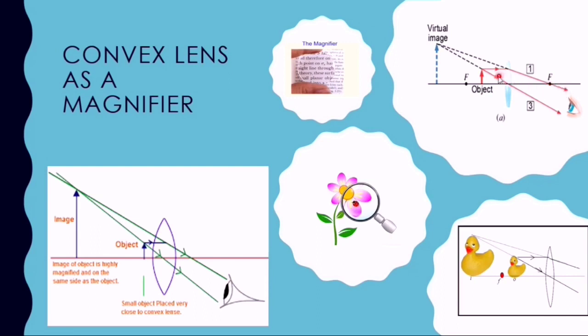We reproduce these lines in the backward direction and get an enlarged and virtual image of the object.